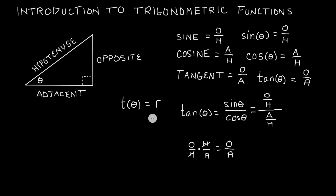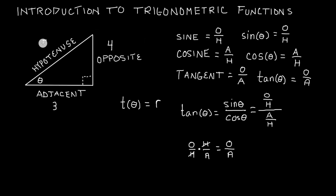Let's do a quick example. If the adjacent side of theta has a length of 3 and the side that is opposite of theta has a length of 4, then by the Pythagorean theorem we know that the hypotenuse is equal to 5. I do have a video on the Pythagorean theorem on my channel if you want to look at how that's done. So let's go ahead and do some examples here.